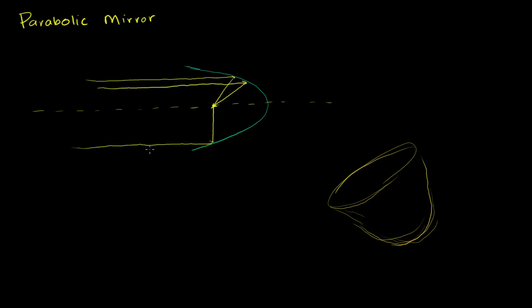What's neat is any incident light ray that's parallel to the principal axis of this parabolic mirror — the reflected ray is going to go through the same point, no matter where you hit the mirror. As long as it was parallel to the principal axis, the reflected ray is going to hit this point. And this point right here is the focus of the parabolic mirror.